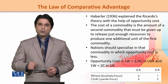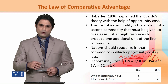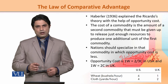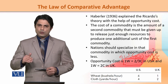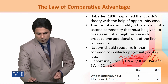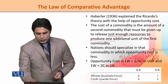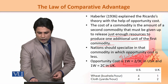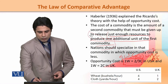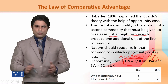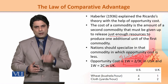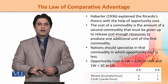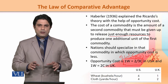The USA must produce more wheat and move more resources into wheat production. Resources currently used in cloth production — just enough resources — must be released and transferred to wheat production. This is possible because we have assumed that labor is mobile within a country between two commodities.